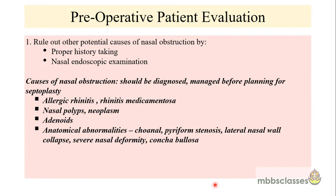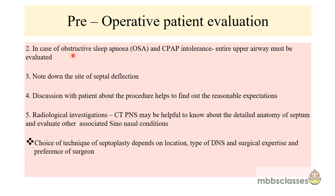Before planning the patient for septoplasty, pre-operative workup is essential. The first duty is to rule out other potential causes of nasal obstruction through proper history taking and nasal endoscopic examination. Causes of nasal obstruction to diagnose before planning septoplasty include allergic rhinitis, rhinitis medicamentosa, nasal polyps and neoplasms, adenoids causing nasopharyngeal airway blockage, and anatomical abnormalities like choanal atresia, pyriform stenosis, lateral nasal wall collapse, severe nasal deformity from previous trauma, and concha bullosa.